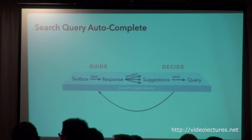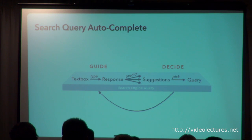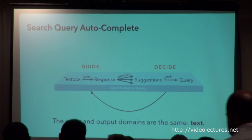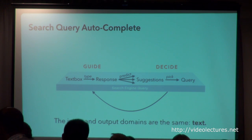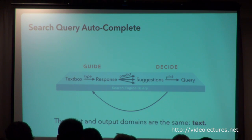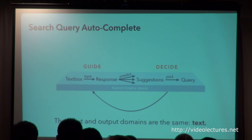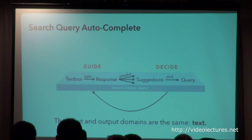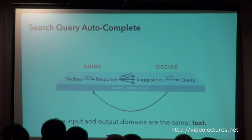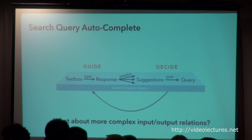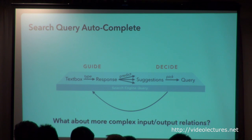This is one way we can start to think about predictive systems, but this example is very simple. One reason it's so simple is that the input and output domain are the same — I'm writing text and getting suggestions as text completions, so the interaction model feels very natural. We can ask: are there extrapolations of this model that work across more complex domains, where those input-output domains may be quite different in nature? Part of the talk today is to explore that question.